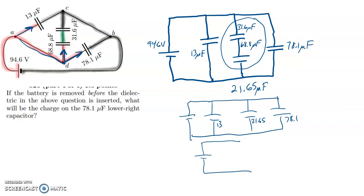So I'm going to add a 13. I'm going to add the 78.1. So the equivalent capacitance in this first situation, according to my calculator, is 112.75 microfarads. And again, this is a 94.6 volt. So the original amount of charge, this is really important.